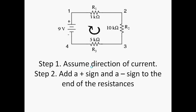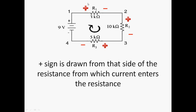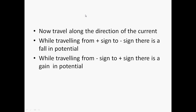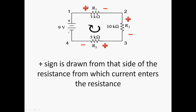Now let us learn how to apply KVL. The first step is assuming the direction of the current. Here the direction is assumed to be clockwise, though you can assume anti-clockwise as well. The second step is to add a positive and negative sign to the ends of each resistance. The positive sign is drawn on the side from which the current enters the resistance. For R1, R2, and R3, the positive signs are assigned accordingly.